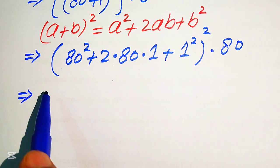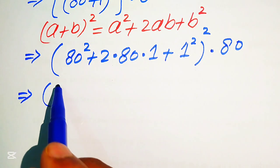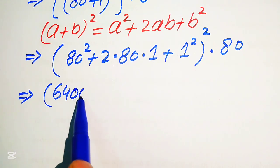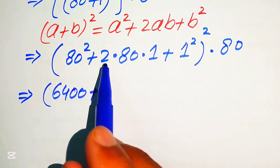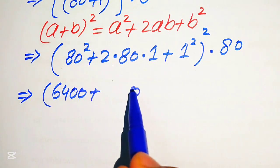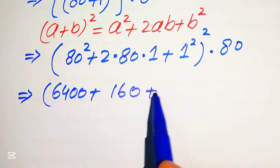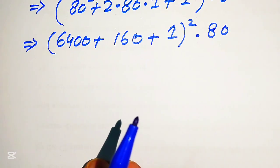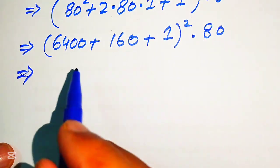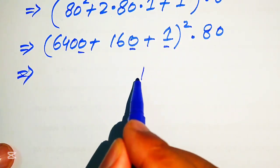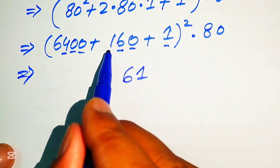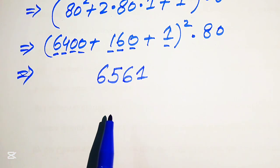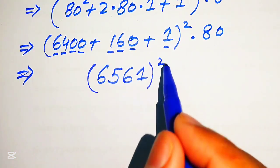Now to find 80 squared: the square of 8 is 64, and squaring 80 gives 6400. Then 2 times 80 gives 160, and 1 squared equals 1. So we sum these up: 6400 plus 160 plus 1. Adding the digits column by column gives us 6561, whole squared, multiplied by 80.